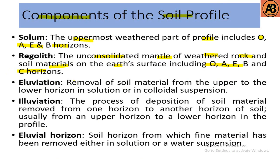Eluviation means the removal of soil material from the upper to the lower horizon, either in solution or in colloidal suspension. Illuviation is the process of deposition of soil material removed from one horizon to another horizon of the soil, usually from an upper horizon to a lower horizon in the profile.